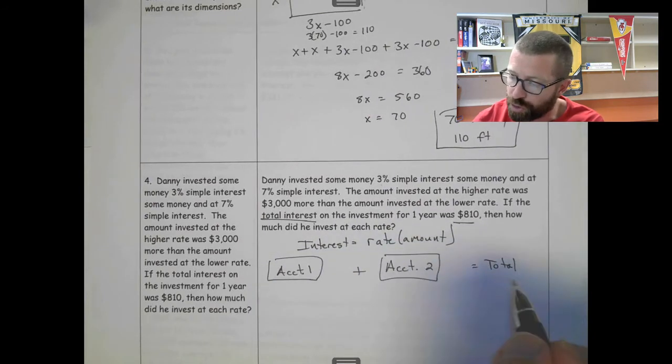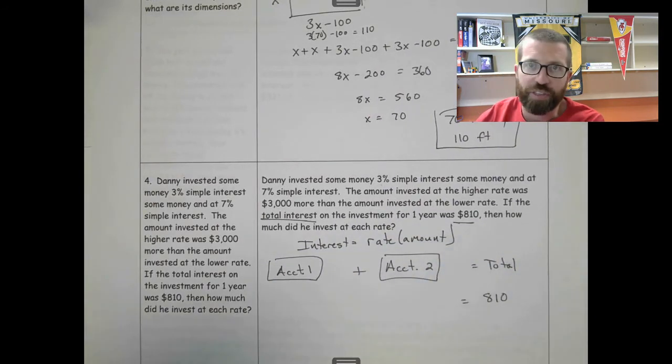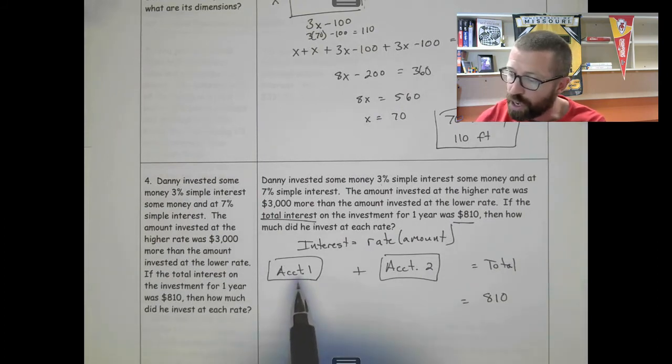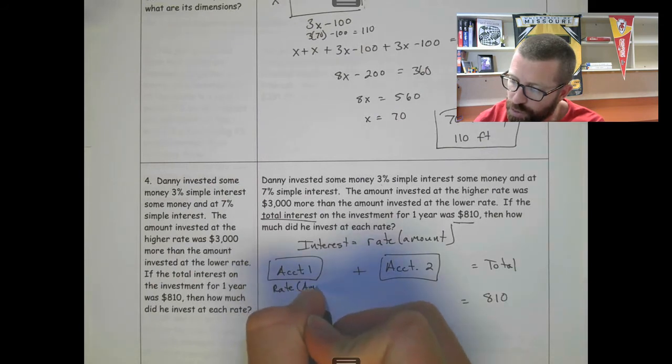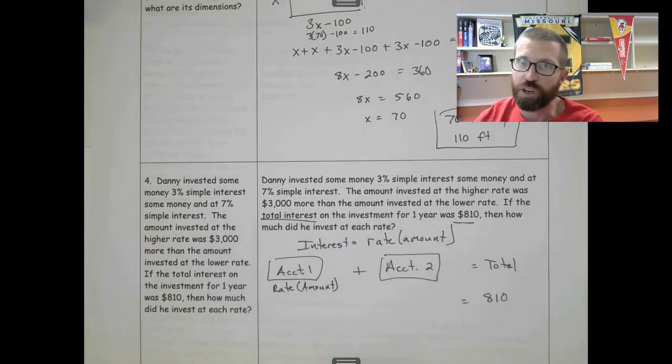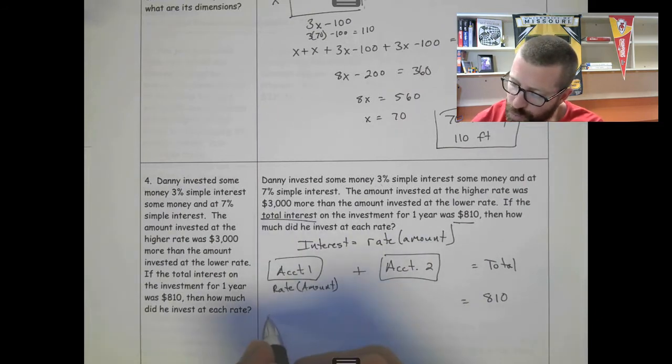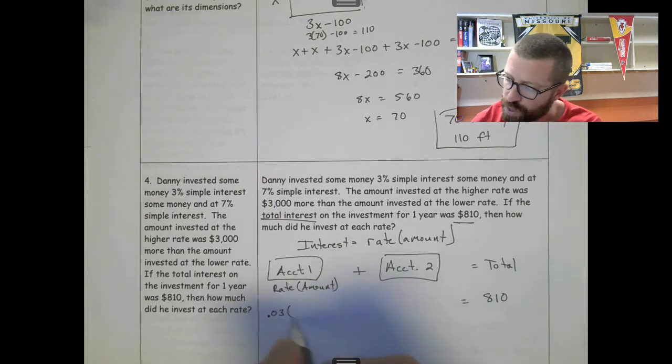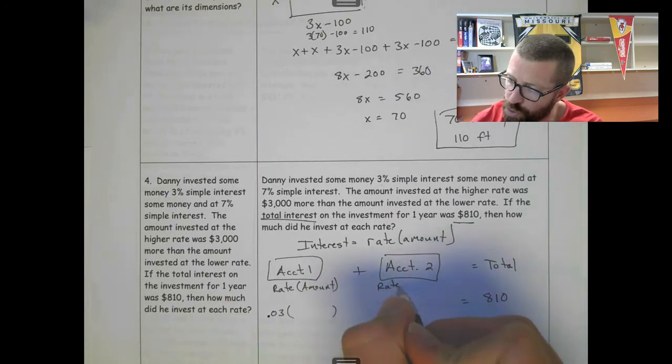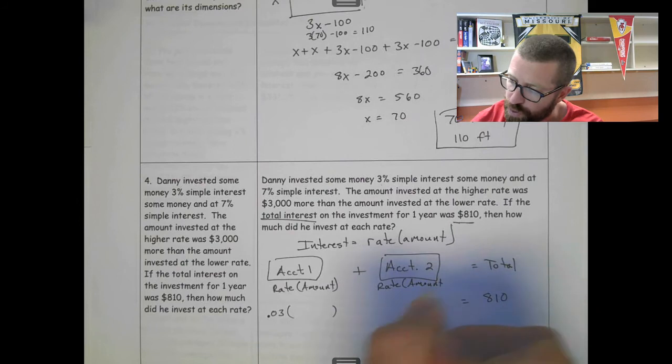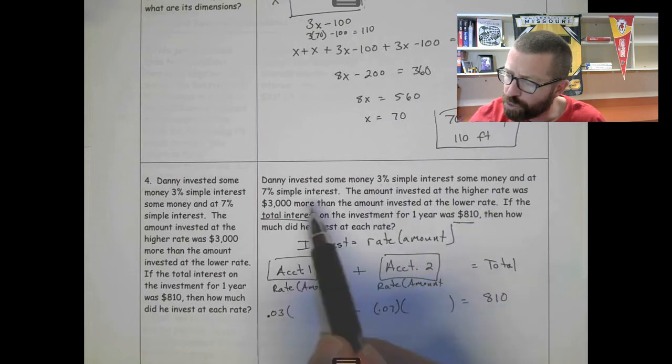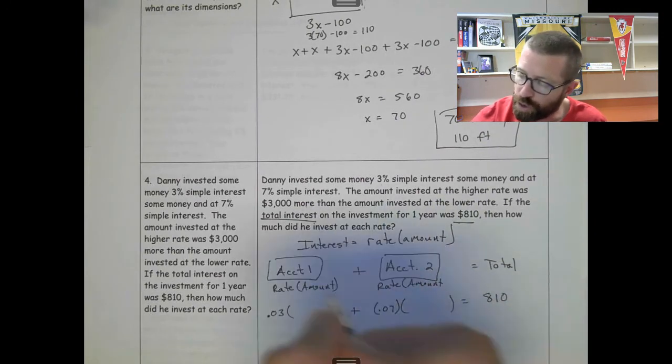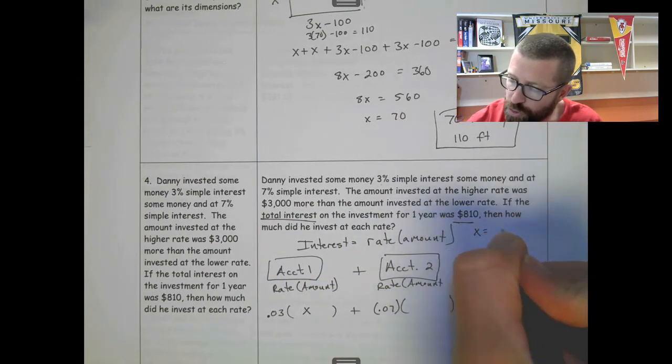These are all interests, total interest. We know the total interest is 810. Interest is rate times the amount invested, so 3 percent is the rate, so 0.03 times the amount. Same thing for account two, 0.07 times the amount. The amount invested at the higher rate was $3000 more than the amount invested at the lower rate. Say the lower rate was x, so that makes the higher rate x plus 3000.